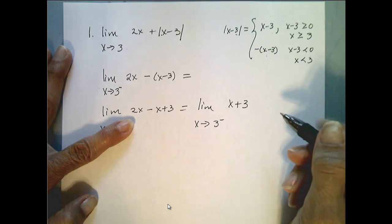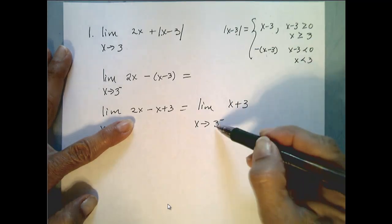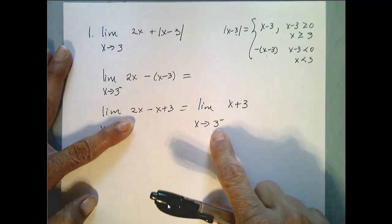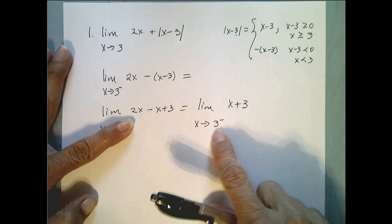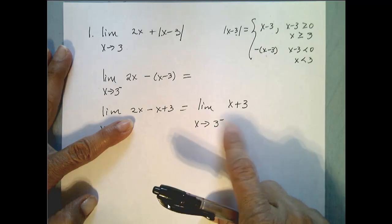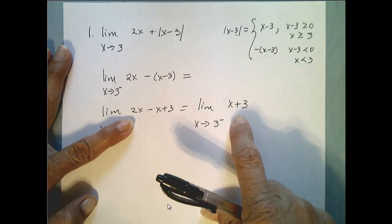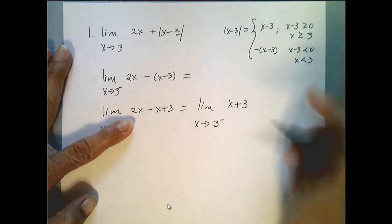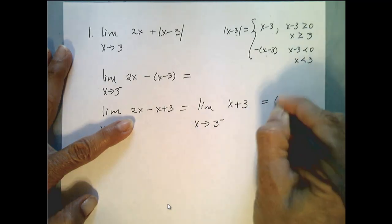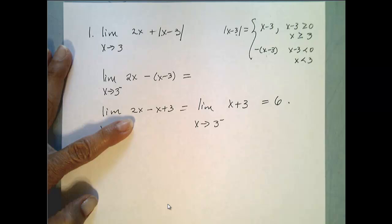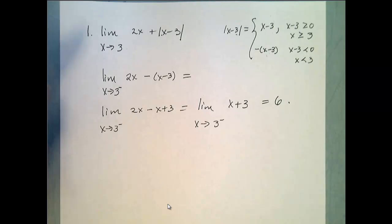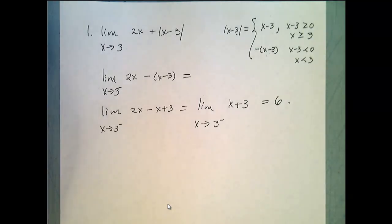That simplifies to the limit as x goes to 3 from the left of x plus 3. Now I'm ready for direct substitution. Remember, this is 3 from the left, not negative 3. Plugging in 3 gives 6. So my left-hand limit is 6.